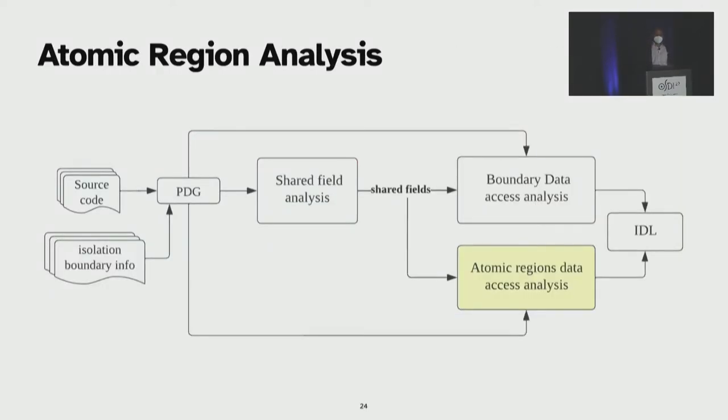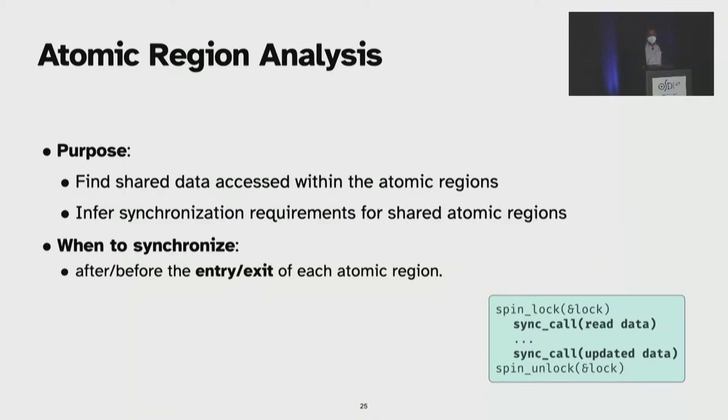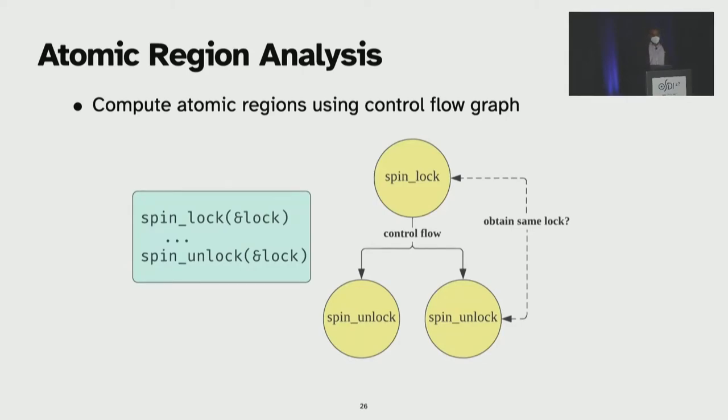The next step is to perform atomic region analysis. First, we find shared data accessed within the atomic regions. Once we have identified those, we perform an analysis similar to the boundary data access analysis to infer which fields are read or written on either sides and infer the synchronization requirements. We synchronize the relevant fields before the entry and exit point of each atomic region. To identify atomic regions, we identify all the lock API calls on the PDG. Then, we use these identified lock calls as the source and find the unlock API on the control flow path. The lock will form a pair with each unlock API reachable on the control flow graph.